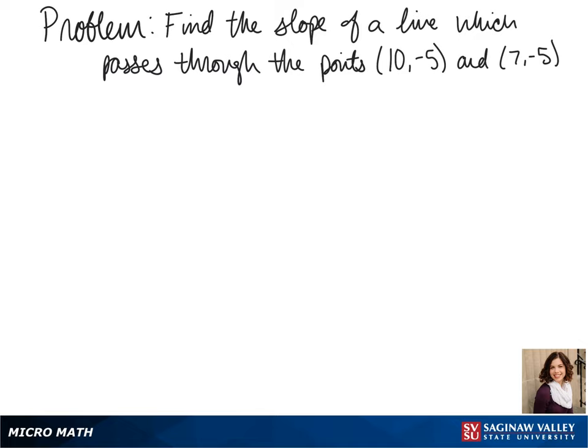Welcome to another day of algebra. Today we're finding the slope of a line which passes through the points (10, -5) and (7, -5).